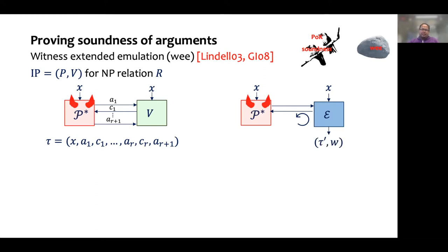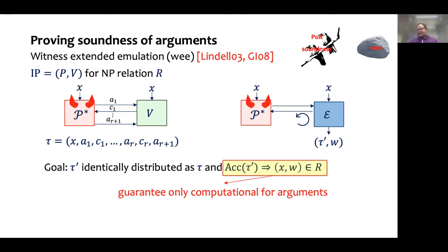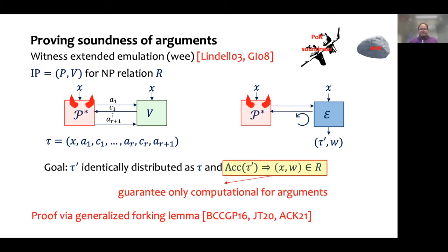We compare it with an ideal-world experiment where the cheating prover interacts with an extractor that only knows the instance and can rewind the cheating prover. The extractor outputs a simulated transcript and candidate witness. The requirement is that the simulated transcript is identically distributed to the original transcript, and whenever the simulated transcript is an accepting transcript — that is, a verifier would accept the interaction — the candidate witness should be a valid witness for the instance. For arguments, the latter guarantee is only computational, meaning it needs to hold against all efficient cheating provers except with some negligible probability. Typically, this is proved using very complicated forking lemmas for multi-round protocols, starting from the work of Butel et al. and refined subsequently.